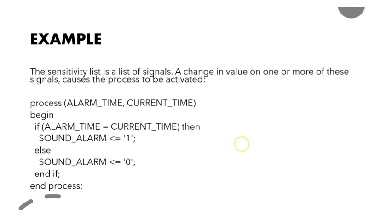The sensitivity list is a list of signals — not variables, but a set of signals on which the process depends. Here you can see there is 'alarm_time' and 'current_time' — these are the two signals on which the process depends, given in brackets. A change in value on one or more of these signals can cause the process to be activated.